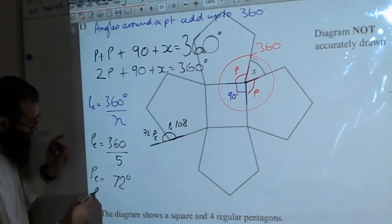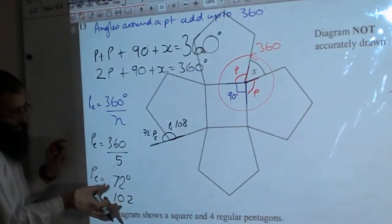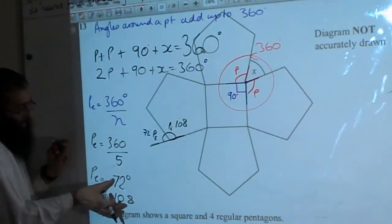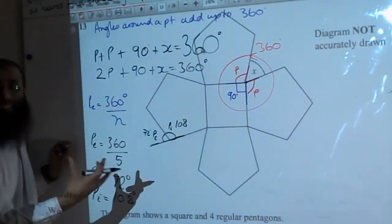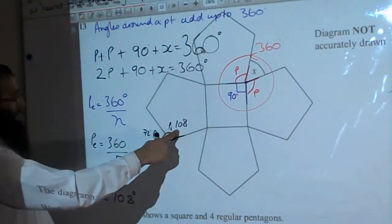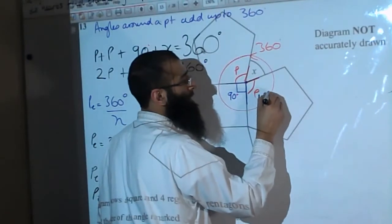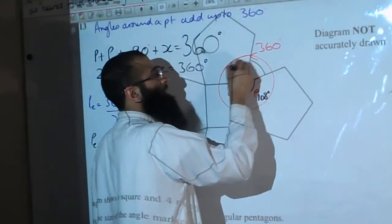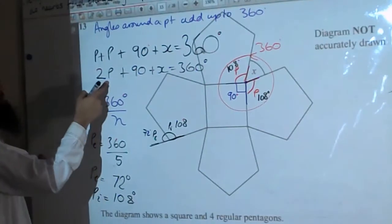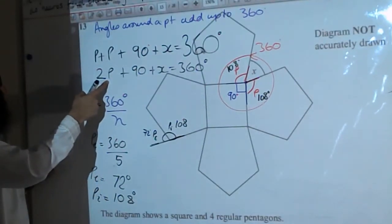The pentagon internal angle equals 180 minus 72 because these two must add together to give 180. So the internal angle is 108 degrees. Both P values equal 108, so we can replace P with 108.